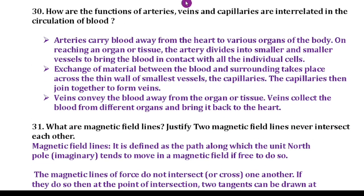Question 30: How are the functions of arteries, veins and capillaries interrelated in the circulation of blood? First, arteries carry blood away from the heart to various organs of the body. On reaching an organ or tissue, the artery divides into smaller and smaller vessels to bring the blood in contact with all the individual cells. Next, exchange of materials between the blood and surrounding takes place across thin wall of smallest vessels, that is the capillaries. The capillaries then join together to form veins. Veins convey the blood away from the organ to tissue. Veins collect the blood from the different organs and bring it back to the heart.